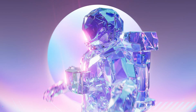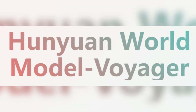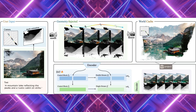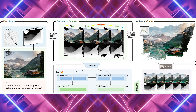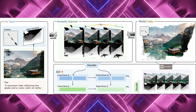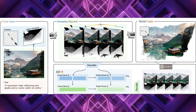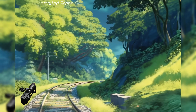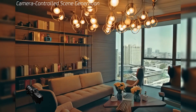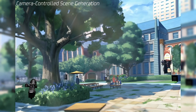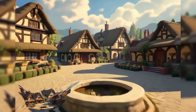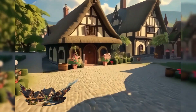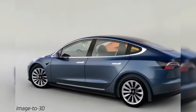Tencent's Hanyuan team has released a new model called Huan Yuen World Voyager, a video diffusion framework that can generate 3D consistent point cloud sequences and depth-aligned video from just one image, allowing user-defined camera paths. The model promises a shift in how 3D environments are created, especially for creators and developers, enabling reconstruction of the scene as a 3D point cloud and making immersive world exploration possible.